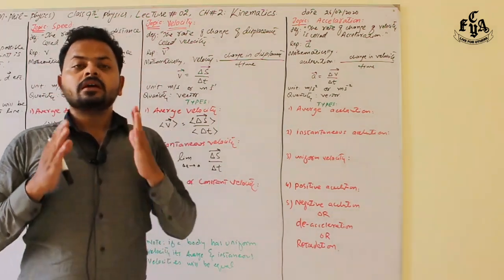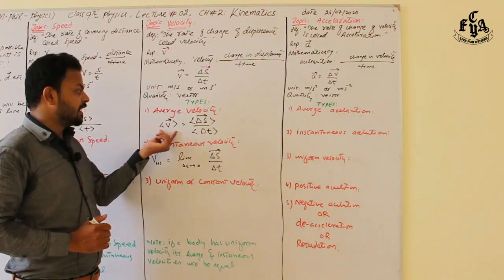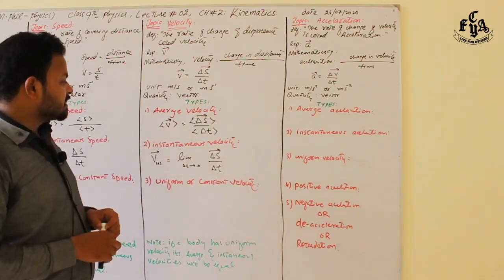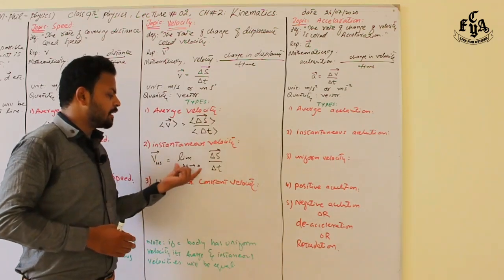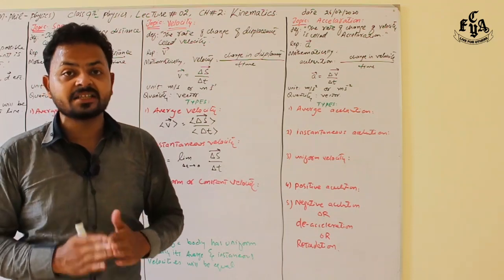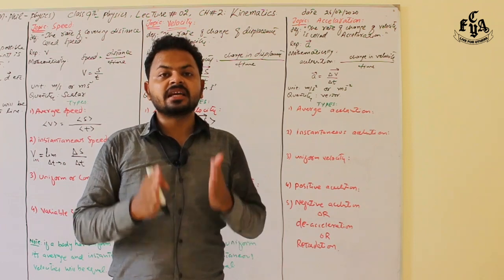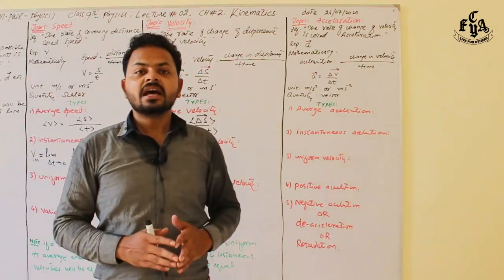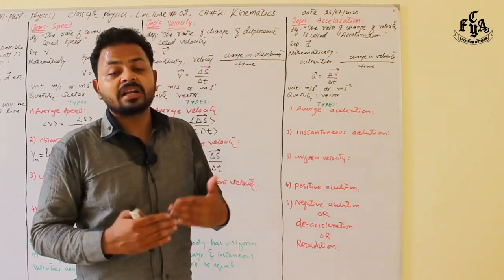There are three types of velocity. Average velocity is when equal change in displacement occurs in equal intervals of time, given by V̄ = Δs̄/Δt. Instantaneous velocity is the velocity of a body in a very short period of time: V_instantaneous = limit Δt→0 of Δs/Δt, where Δt→0 means time is very close to zero. Uniform velocity means equal change in displacement occurs in equal intervals of time. If a body has uniform velocity, its average and instantaneous velocities are both equal.